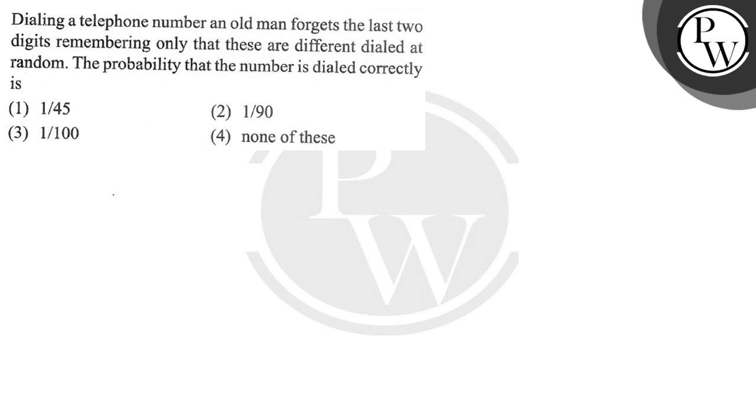So an old man has forgotten the number, specifically the last two digits. He only remembers that the digits are different - that's all he remembers, that the digits are different.